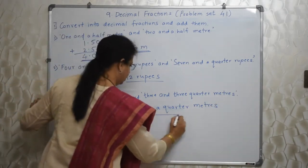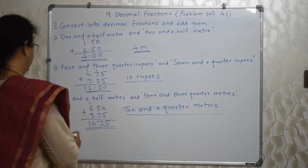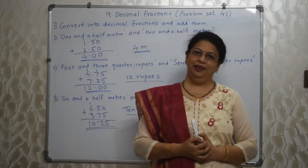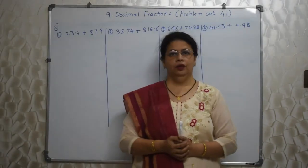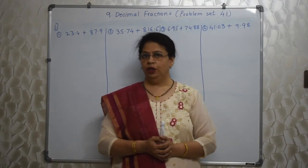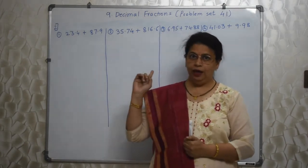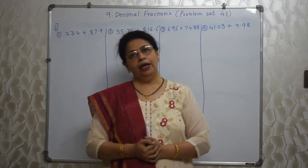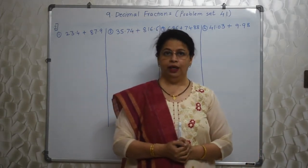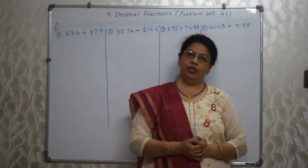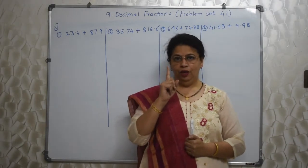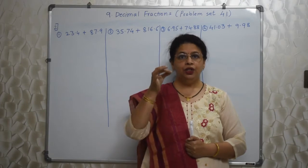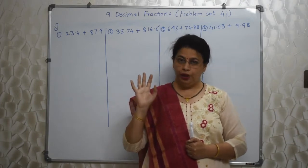This is our answer. So simple. Aage baarte hai. Students, meinne question number 2 board pe likhya hai, poora. There are 4 sums. Ismain humain decimal fractions ki addition karni hai. Ismain ek hi instruction hai jho aapko follow karni hai — that is decimal ke niche decimal aana zaroori hai.